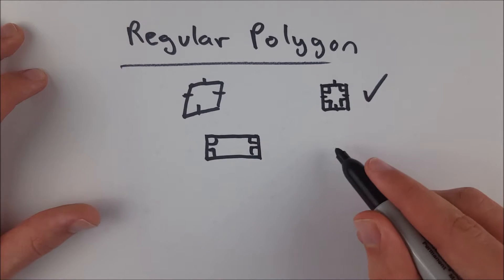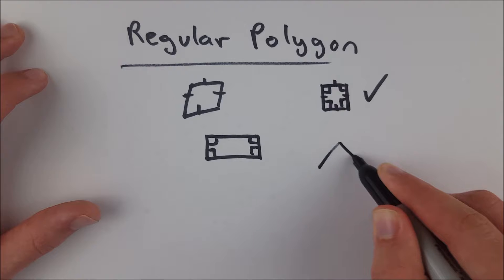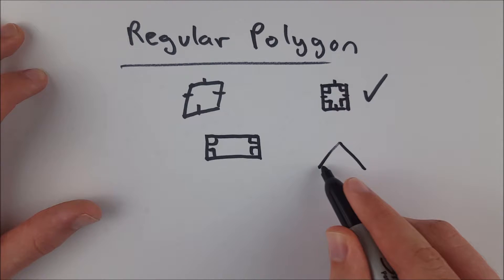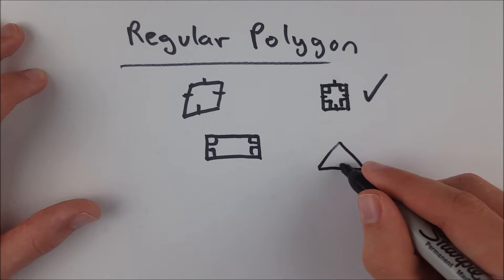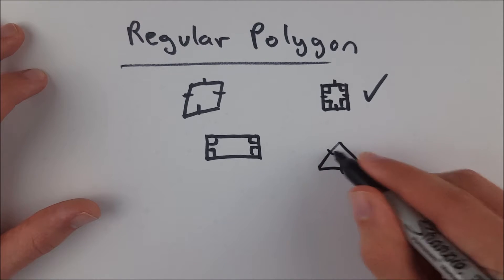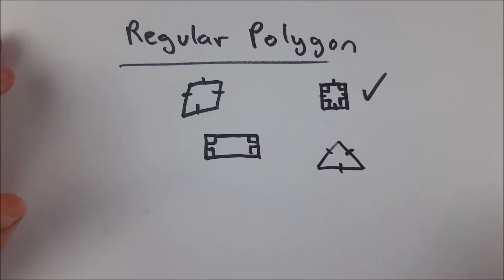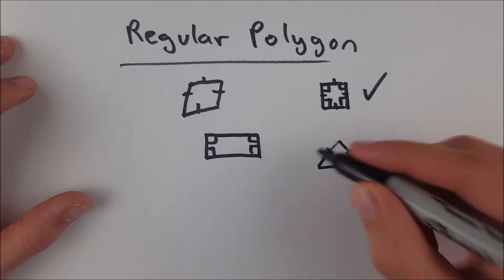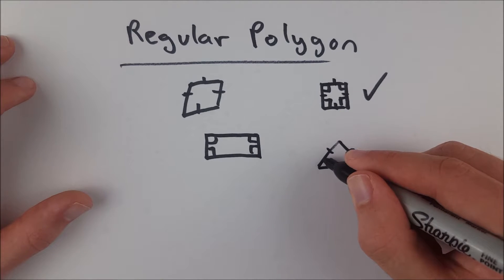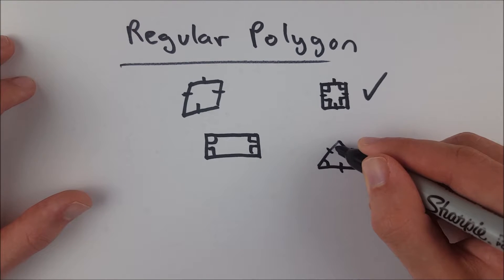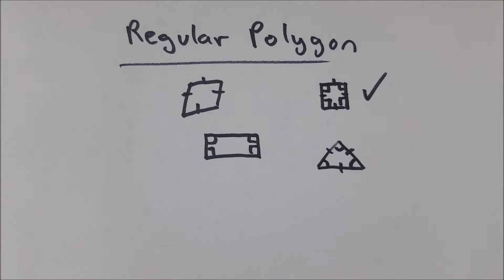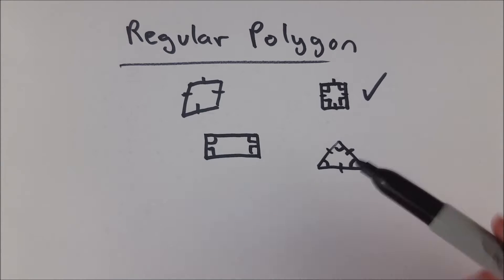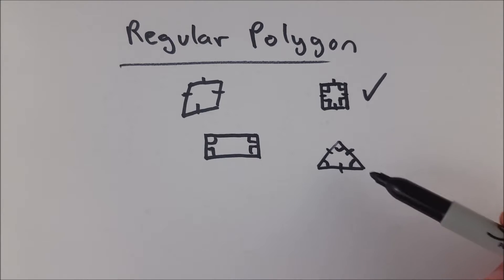A regular triangle might look something like this. This is a triangle that I tried to draw equilateral — it almost looks equilateral. And all of its angles are congruent as well. So this is a regular triangle because it is equilateral and equiangular.